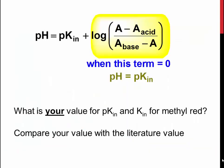At the point where the log expression equals zero, pH equals pKin. You can also calculate the kin. Compare the values you find from experiment to literature values.